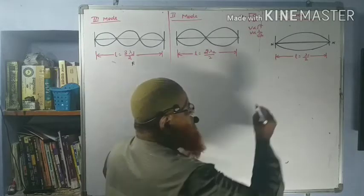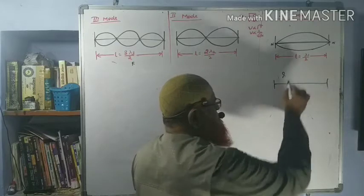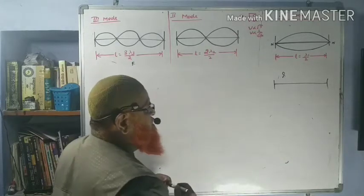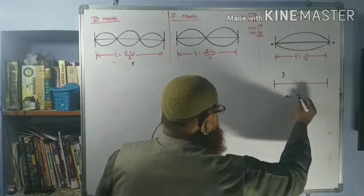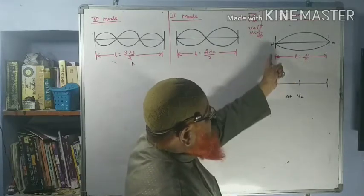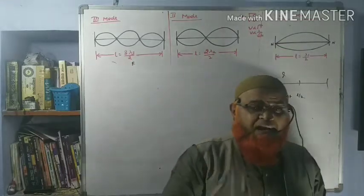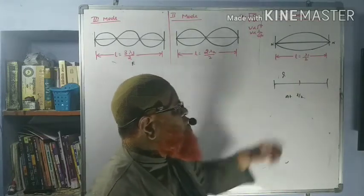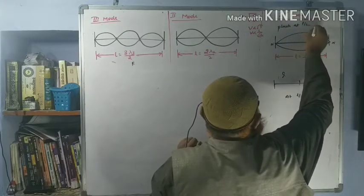Consider a wire of length L — imagine it as the wire of a guitar. If you pluck it exactly at the middle, that is at L by 2, it starts vibrating. When you pluck at L by 2, you get two nodes and one antinode.